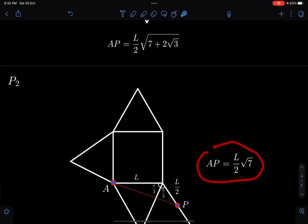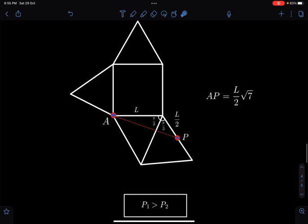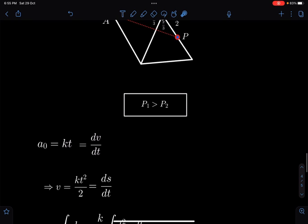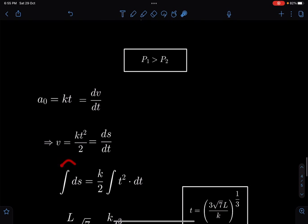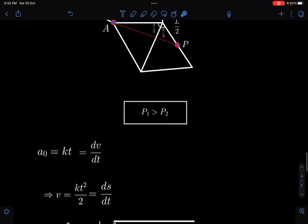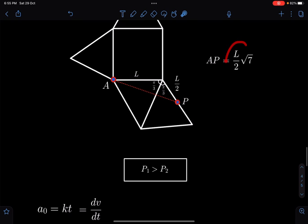Once we decide that this is the shortest path and it will be traveling with maximum possible speed, so a₀ is given as kt, and that equals dv by dt. So we know v as a function of time, and I can write it as ds by dt. Finally we will be getting ds equals k by 2 times t squared dt. The limit of s will be the length of path 2, which is L by 2 root 7.